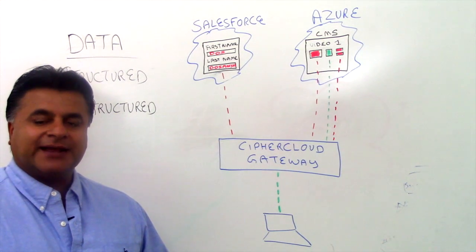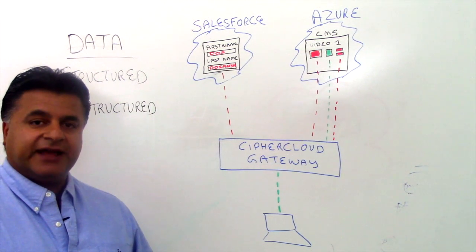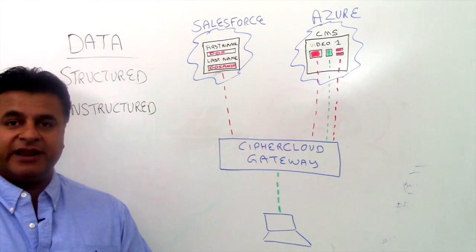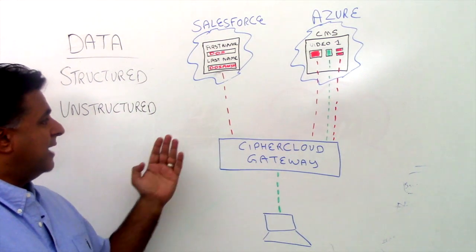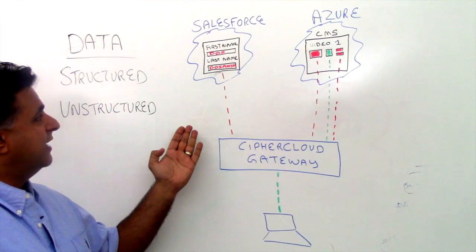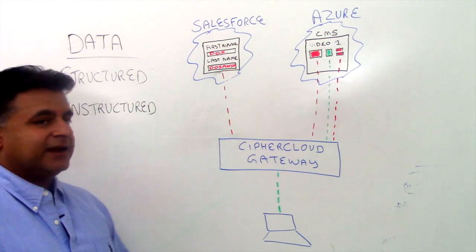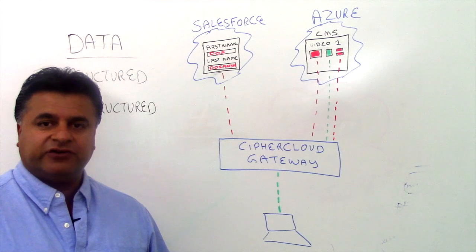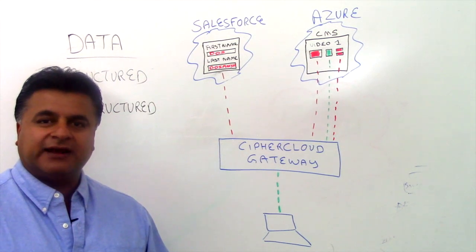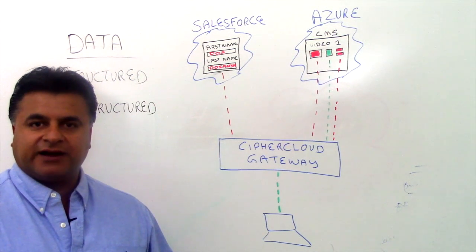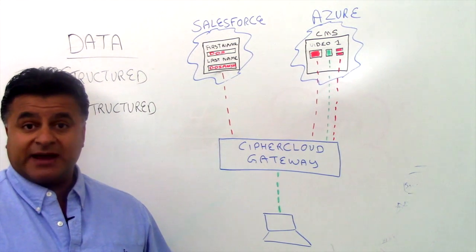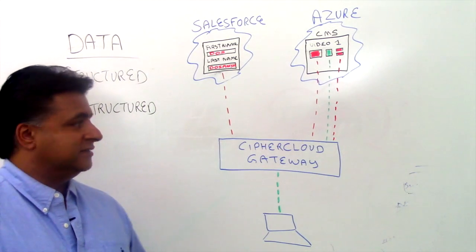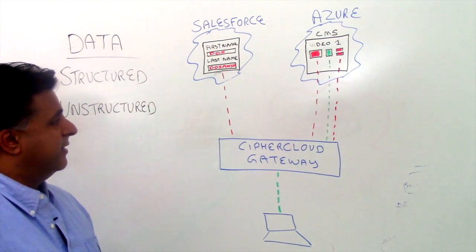Let's talk about a case study where you would use structured data and unstructured data, and in a third scenario, the combination of the two. In this example, we have structured data where people want to protect PII information in the cloud. It could be for a financial institution or healthcare, where they want to protect patient records, medical records, financial transactions, or financial records. That could be done in a structured environment.